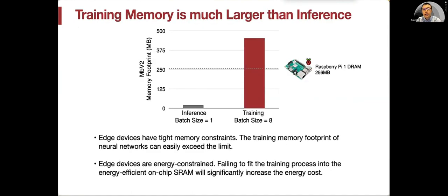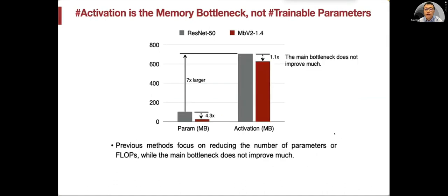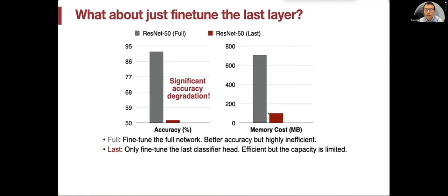What about training? Training memory is much larger than inference due to two factors: batch size, and storing intermediate activations for backpropagation. We find activation is the major bottleneck, not trainable parameters. From ResNet-50 to MobileNet V2 1.4 with the same accuracy, the parameters reduced by 4x. However, the major bottleneck, which is the activation, improved by only 10%. That's the limitation for conventional model design - they are not designed for on-device training. The number of parameters is the focus, but the number of activations didn't improve much.